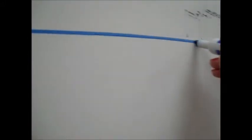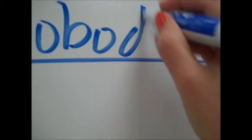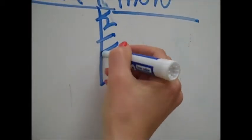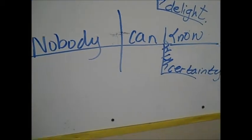Sentence number three just needed the line between 'nobody' and 'can know'. 'Nobody can know', 'nobody can know with certainty'.